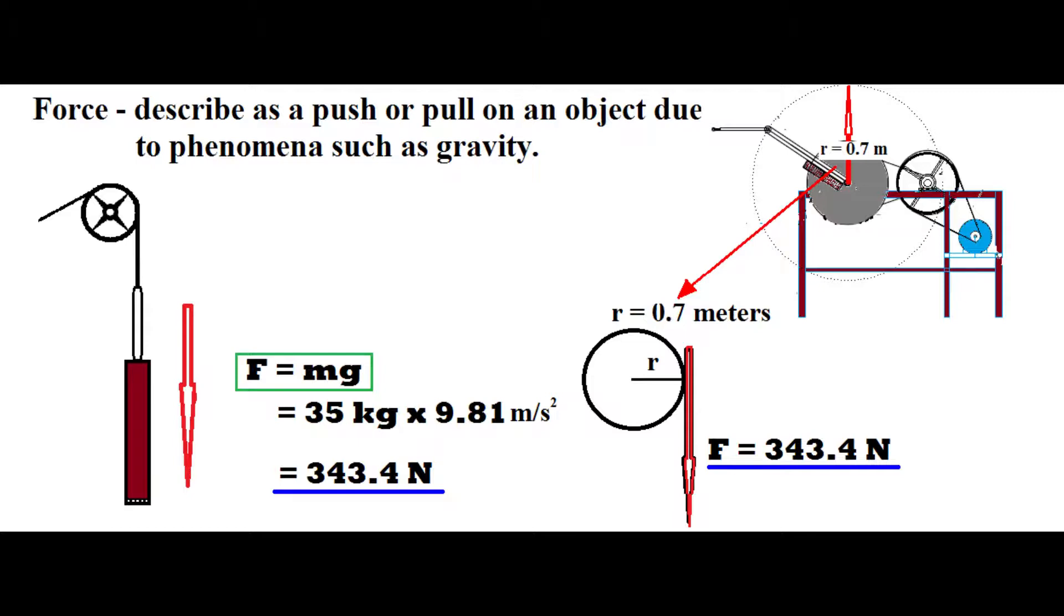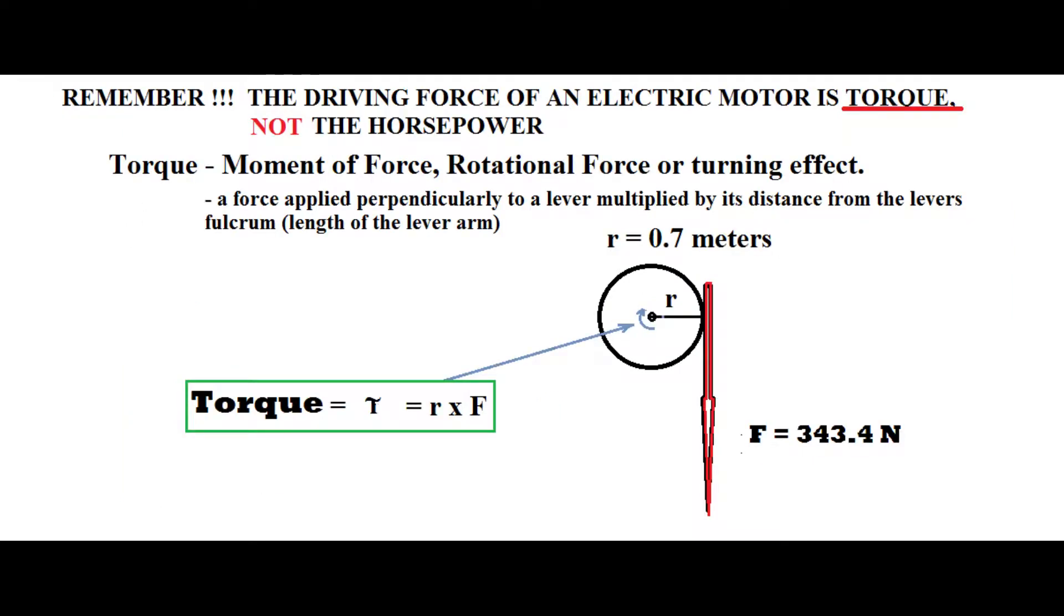Note that the circular path of our lever arm in this machine is 0.7 meters of radius. With that data, we can compute the torque. So torque is defined as the moment of force, rotational force, or the turning effect equals radius times force.